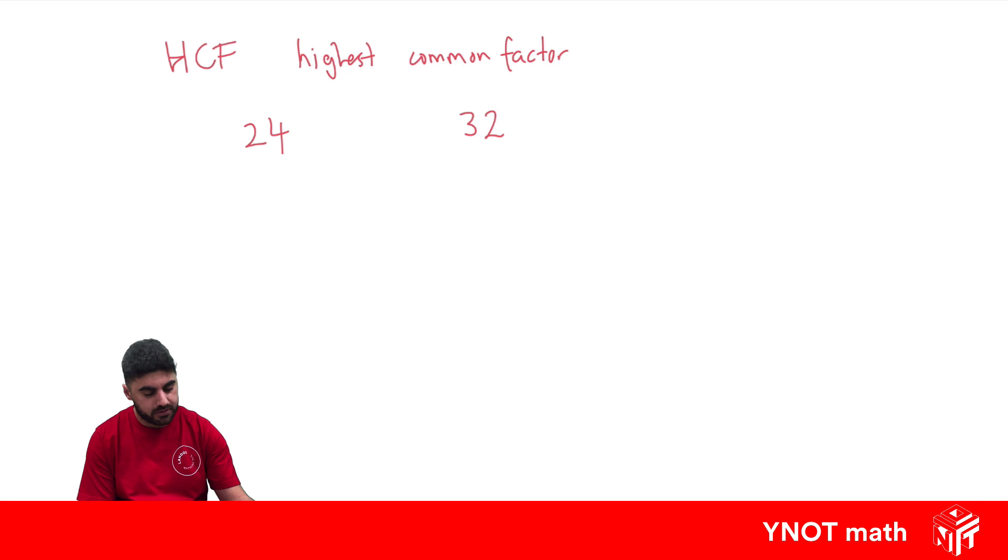So let's have a look at factors of 24. We've got 1 times 24, 2 times 12, 3 times 8, and 4 times 6.